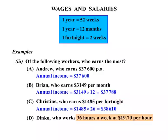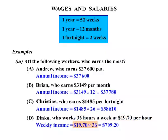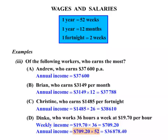Finally, Dinko. We still need to work out something before we can get to the annual income. He's working 36 hours a week and getting $19.70 per hour, so the weekly income is $19.70 times 36, which works out to be $709.20. Now for the annual income, that's his weekly income multiplied by 52 weeks in the year, giving us $36,878.40.